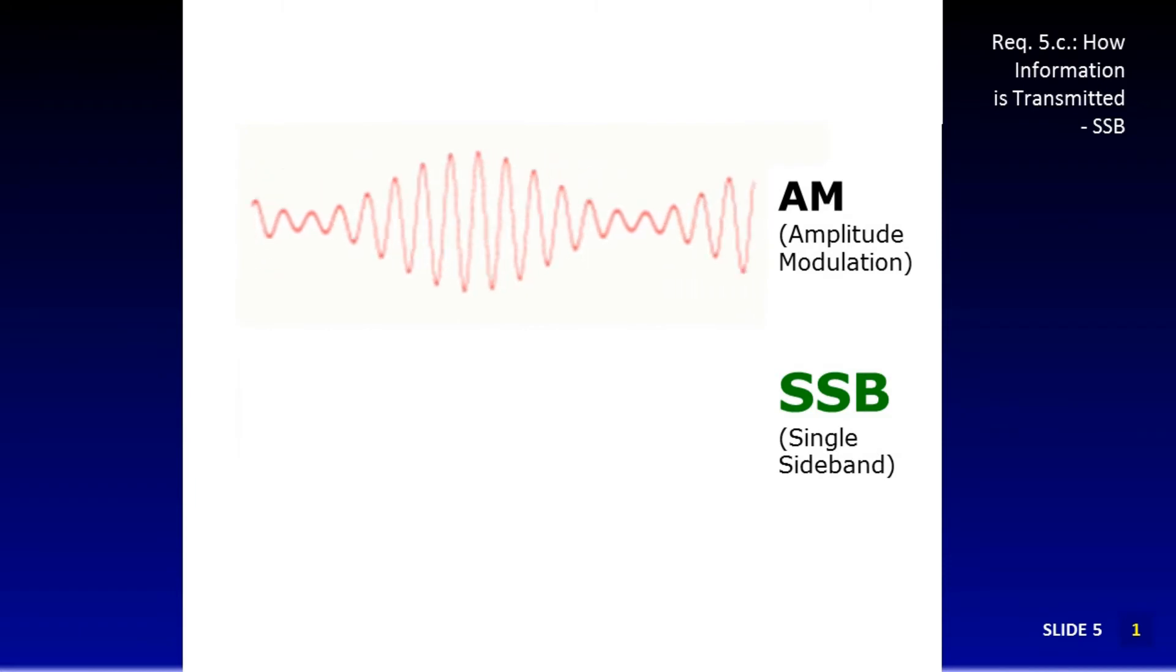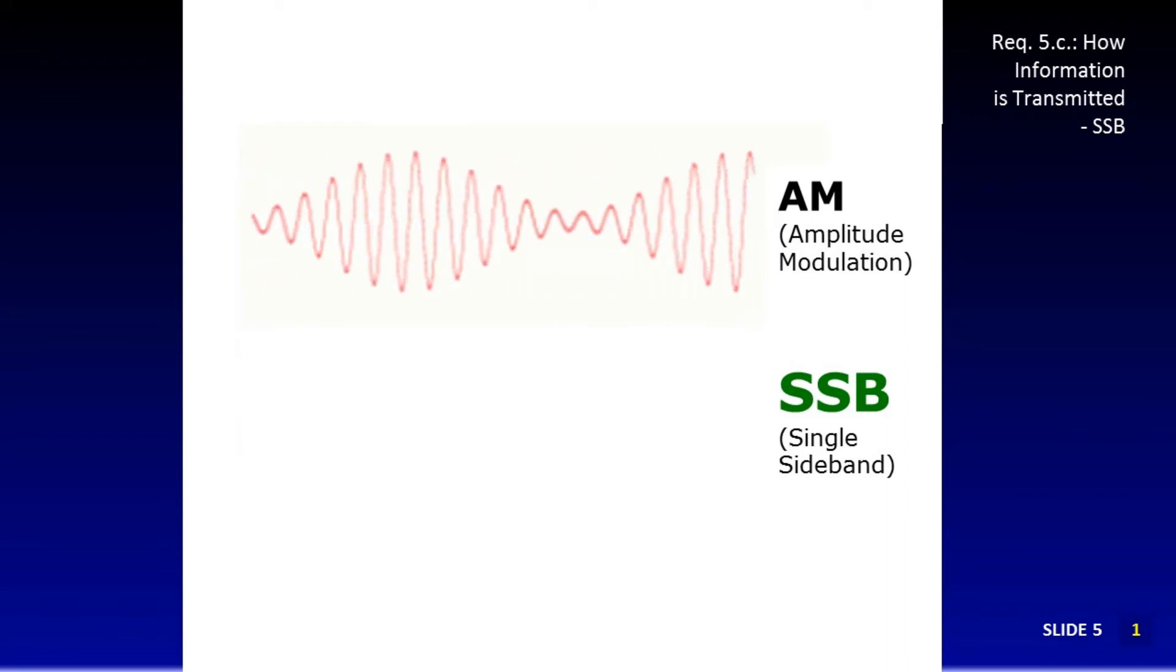Here, we're showing the single sideband signal that matches the words that are being spoken into the mic. Single sideband is more efficient than AM. Let's look at another way to send information in our transmitted signal.